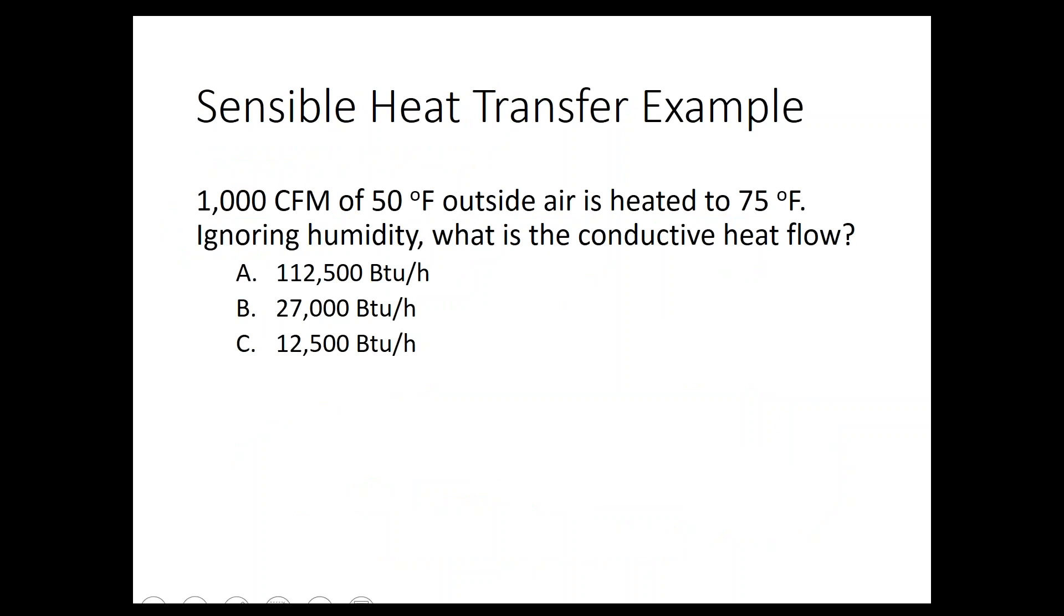Now if you've done this before, maybe you want to quiz yourself, just pause the recording right here, see if you can solve this problem. So this is an example, you got 1000 cubic feet per minute of 50 degree outside air, and then you heat that up to 75 degrees. And ignoring humidity, what's the conductive heat flow? So we're going to use the equation on the previous slide. Q equals 1.08 times CFM times delta T.